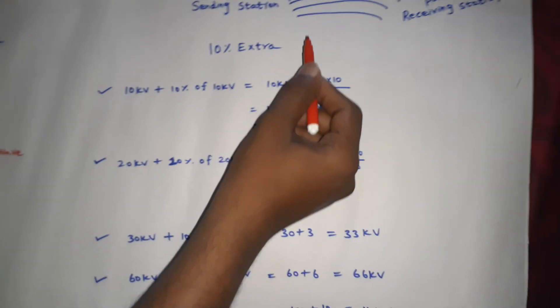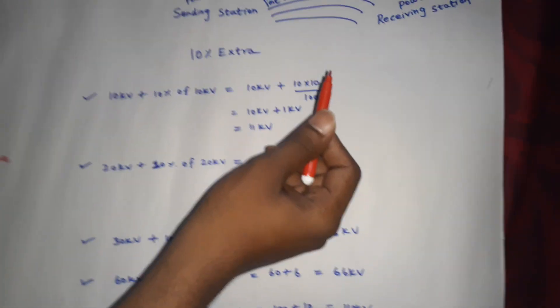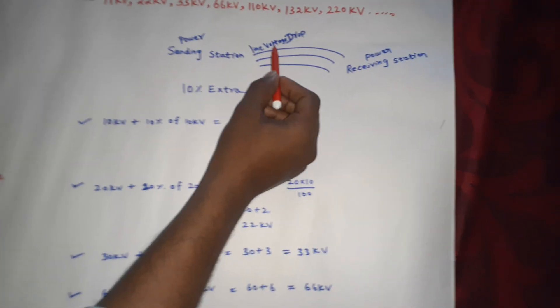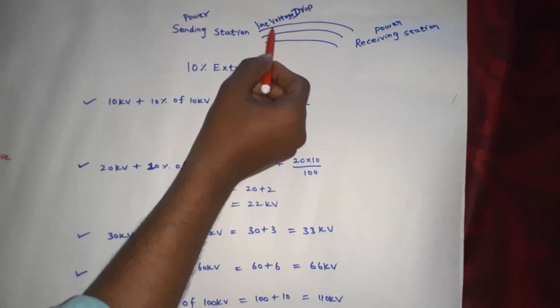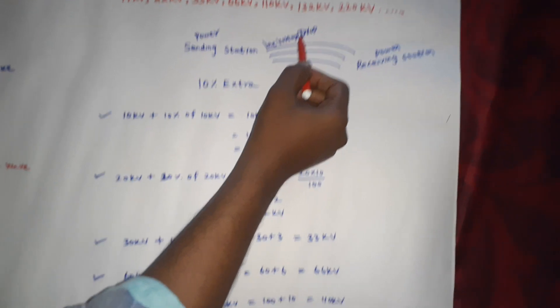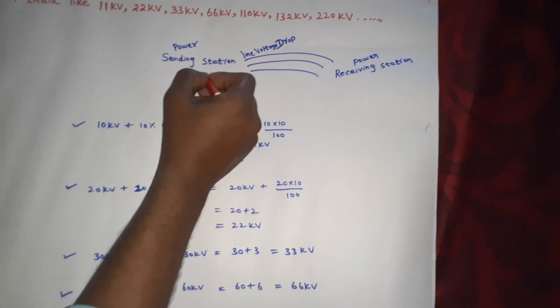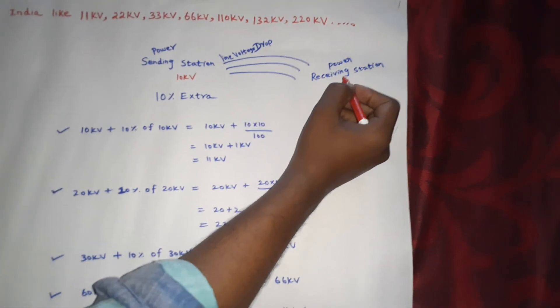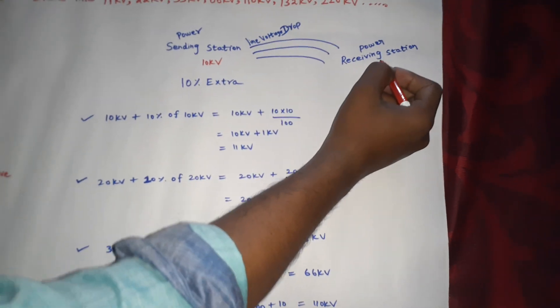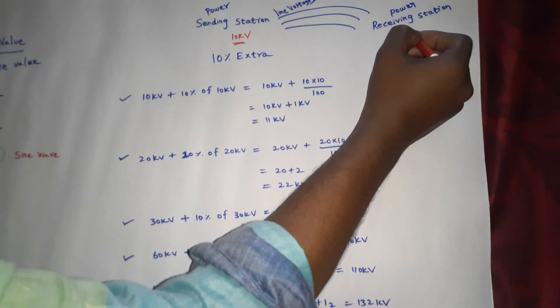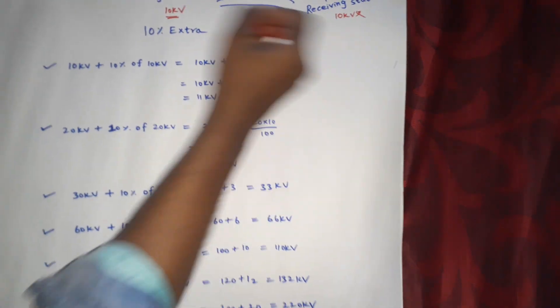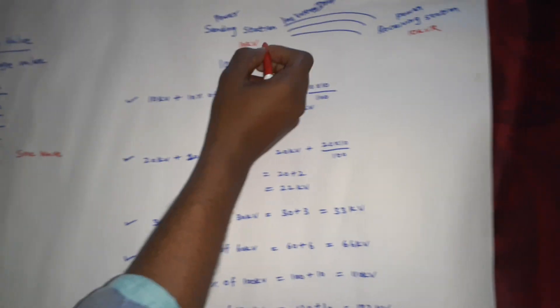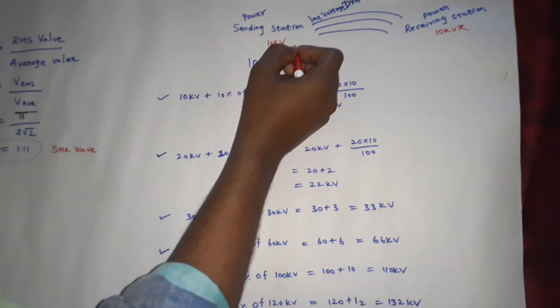If you use aluminum conductor, you will have a loss, that is called I²R loss. There is a line voltage drop due to its impedance or inherent resistance. Suppose if you transmit 10kV, you cannot receive the full 10kV. That is a loss. What is the loss? 10kV minus 10% equals the received voltage.